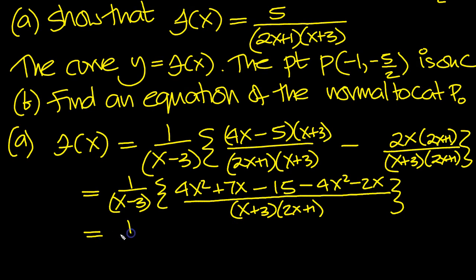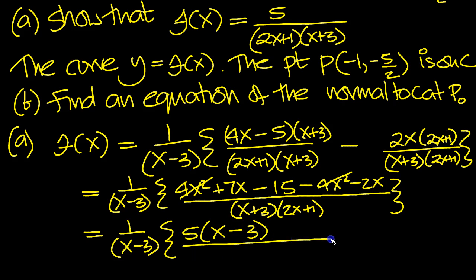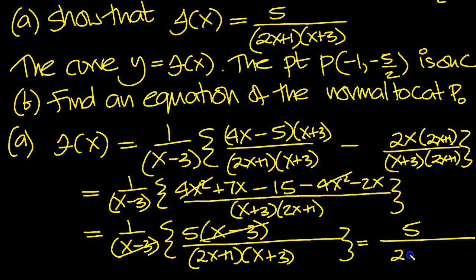That's what we've got then. Let's just write down what this is. This is 1 over x minus 3. And then we've got 4x squared and 4x squared minus cancels. 7x minus 2x is 5x minus 15. Now there's a 5 common, so I'm going to take that out straight away. 5x minus 15. So I need an x minus 3 here. And underneath we've got, I'm going to write it around the other way, 2x plus 1 times the x plus 3. So that's equal to then. The x minus 3 now will cancel top and bottom. We're just left with 5 over the 2x plus 1 times the x plus 3. And that's what we wanted.